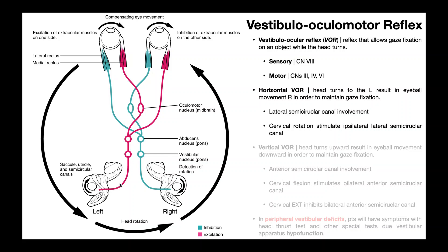The nerve fibers coming out of the vestibular apparatus on either side are the vestibular nerves — one component of cranial nerve 8, which is the sensory component of the VOR. That information regarding equilibrium and the head turn is relayed to the vestibular nucleus on the same side. From there, it's relayed to a variety of nuclei, each associated with one of the three cranial nerves that form the motor component of the VOR.